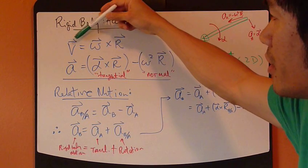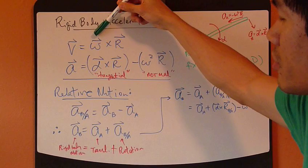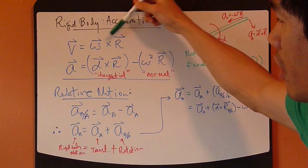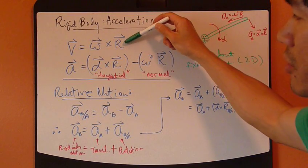The linear velocity is simply omega, the angular velocity, crossed with the displacement vector.